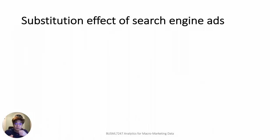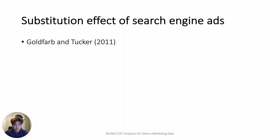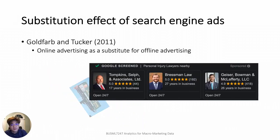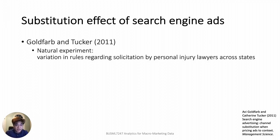So far I have explained the core concept of the difference-in-differences method. Now I'm going to introduce two applications to marketing data. The first is Avi Goldfarb and Catherine Tucker's study on the substitution effect of search engine advertising. This study presents empirical evidence showing that online advertising serves as a substitute for offline advertising, especially for the personal injury lawyer market. To find the empirical evidence, the authors exploited a natural experiment.